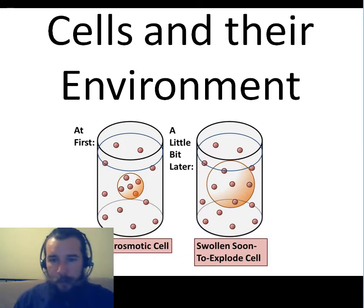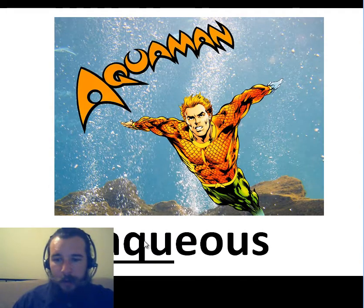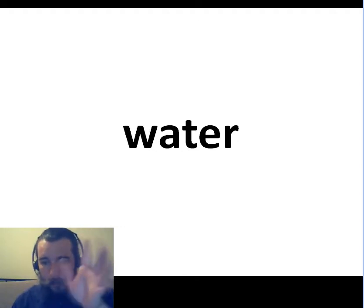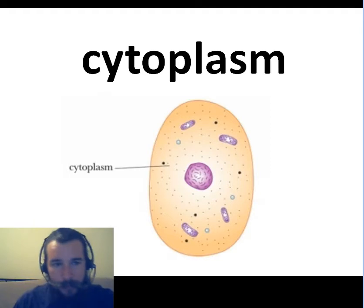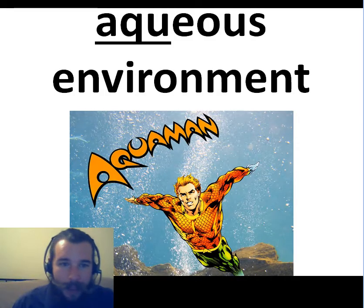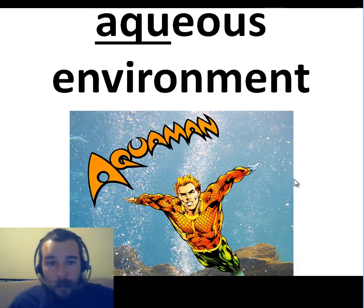First and foremost, we're talking about cells. Cells are almost always found in an aqueous environment — like Aquaman — which is an environment of water. Additionally, the cytoplasm inside of cells is also an aqueous environment, like Aquaman. So you have water outside the cell, water inside the cell, just like the baggy of water floating in water that we've talked about before.